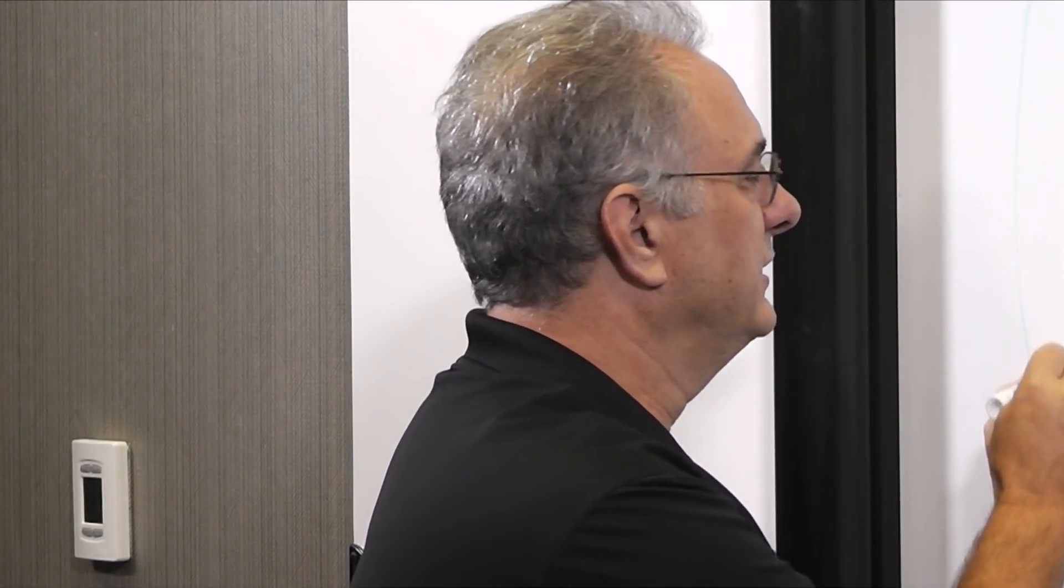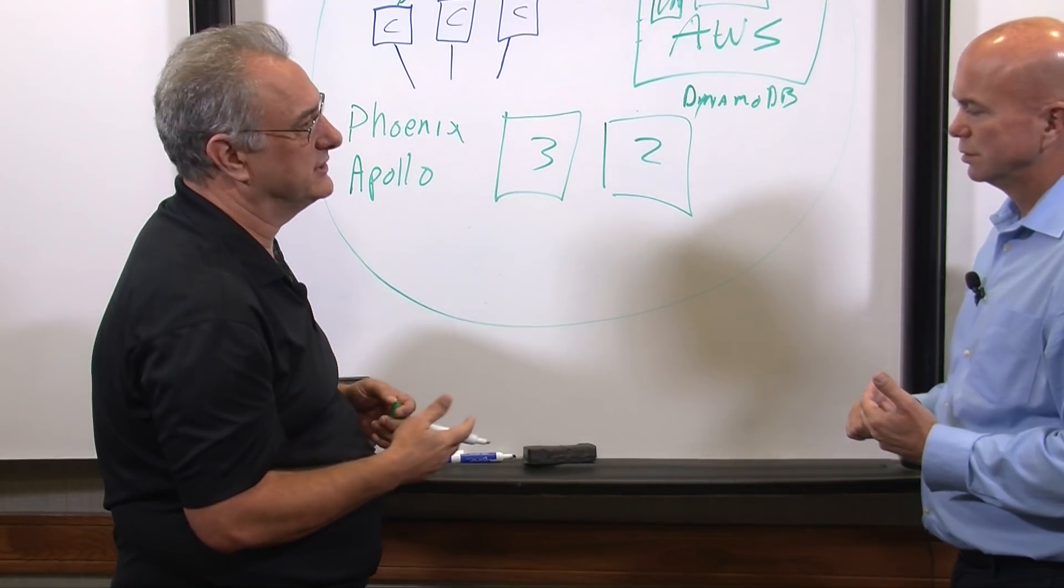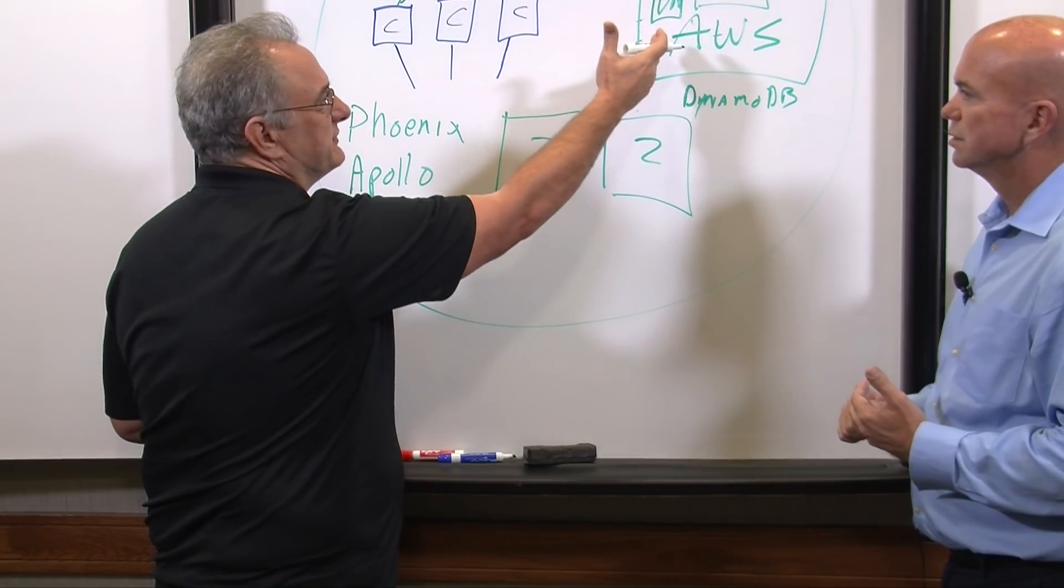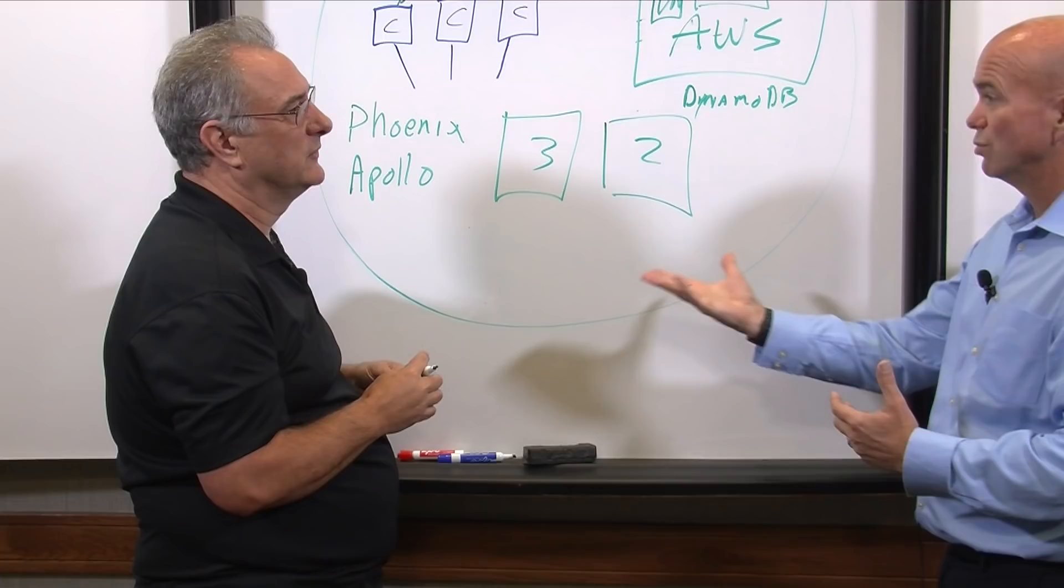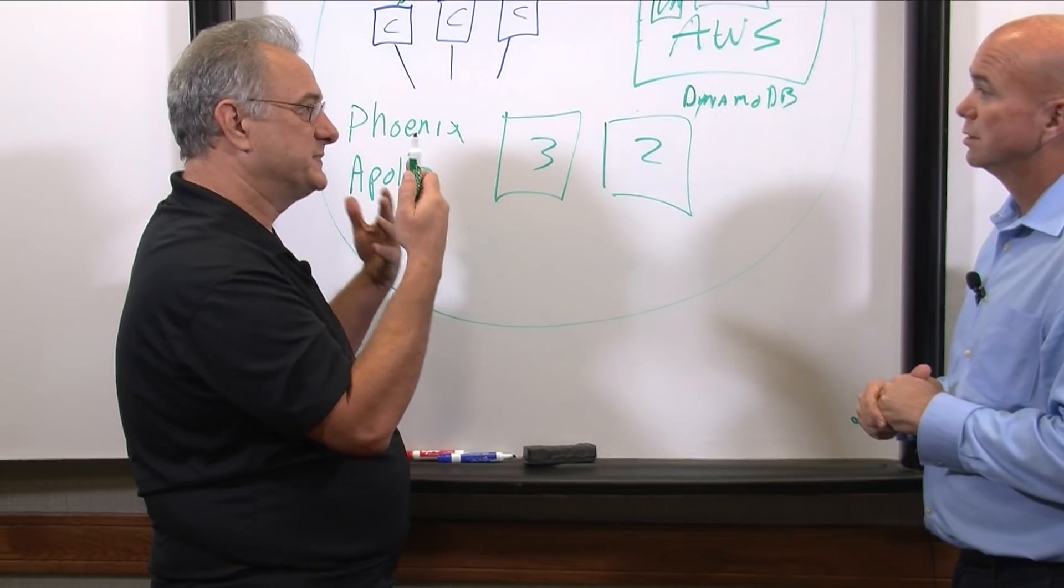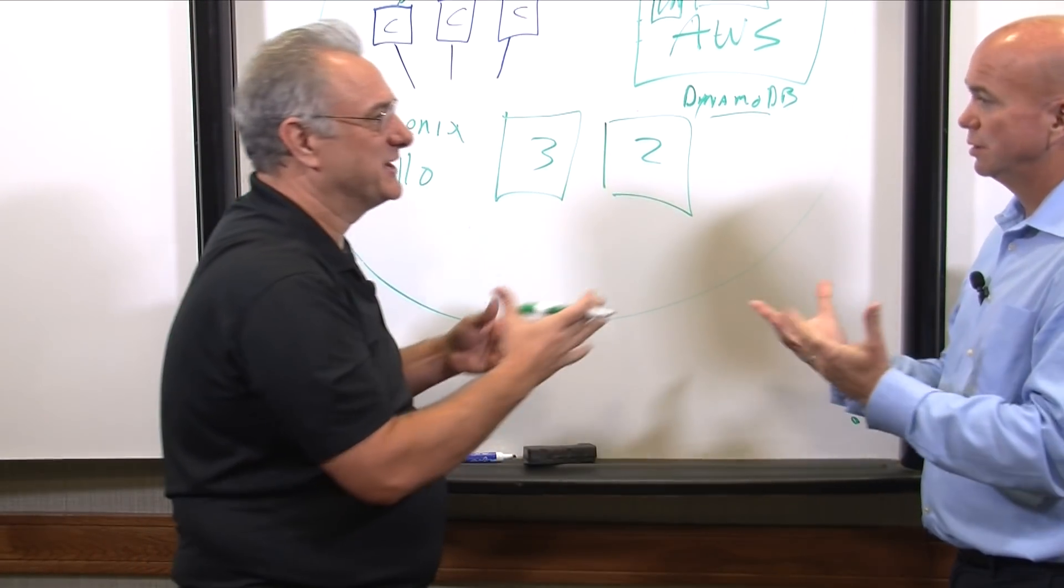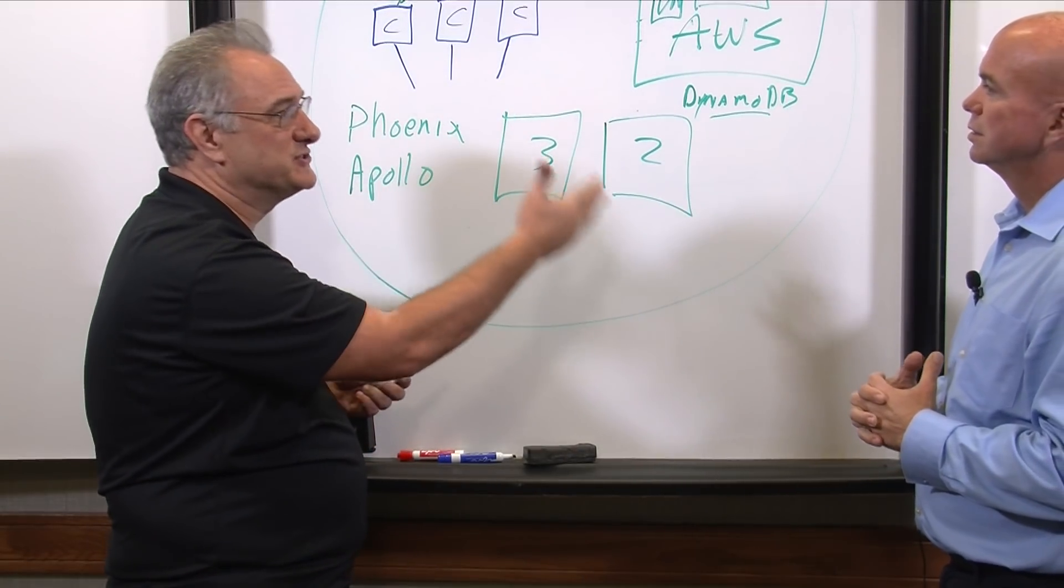And then finally the new product work that we announced this week is Apollo, which is designed specifically to protect everything that's running in AWS. Oh, so even an Amazon native application would be protected by that. Today it's going to protect AWS specifically. And then we're going to expand it to protect things like DynamoDB and all of the other things and S3 and not just protect, but also manage those resources.